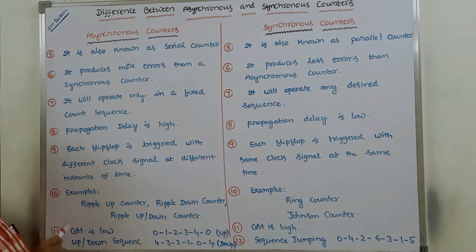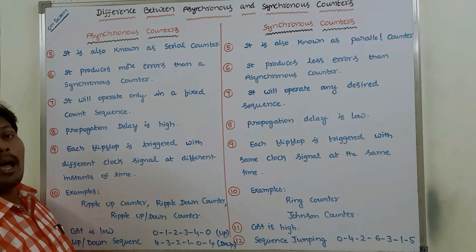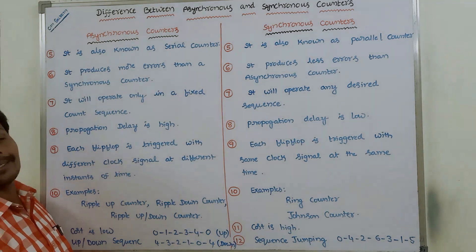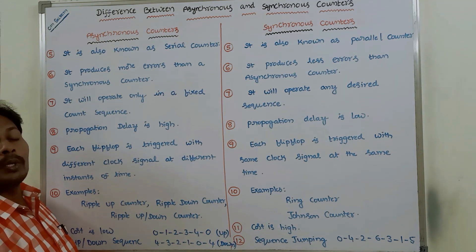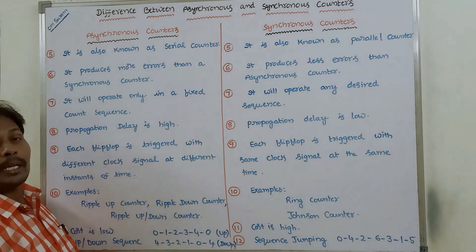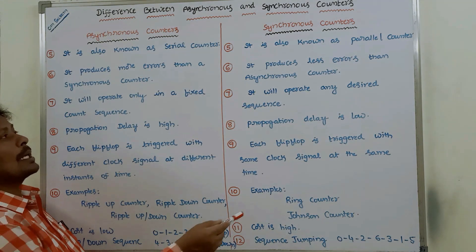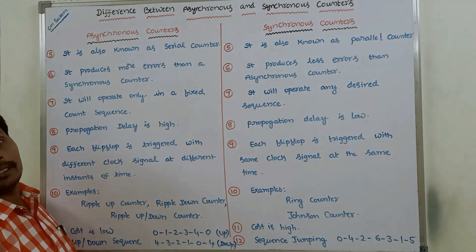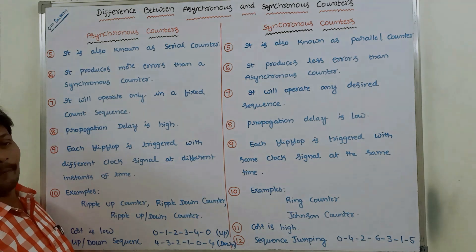Eleventh point: cost is low to construct an asynchronous counter circuit. To construct a synchronous counter, cost is high.